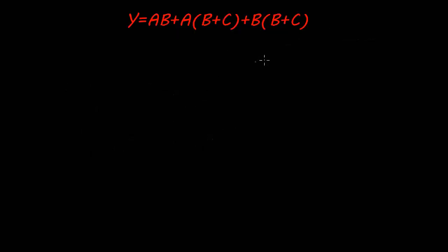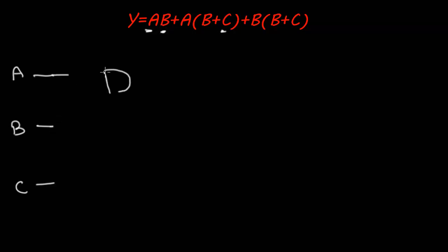Let's try to simplify a Boolean equation, but first let's understand the gate equivalent diagram. We have three inputs a, b, and c. The term a dot b means the AND-ing of these two, so we draw an AND gate with inputs a and b giving output ab. Moving to the next term, b plus c means an OR gate.